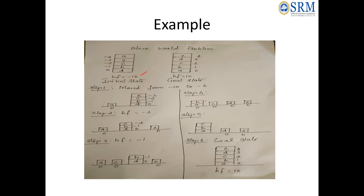The final goal state is A, B, C, D, E stacked with values 0, 1, 2, 3, 4 — totaling 10. In step 1, A is at the top and is taken out and placed on the table, giving it value 0. The remaining stack E, C, D, B has values 0, -1, -2 and so on. Adding them up, the heuristic function improves from -10 to -6.